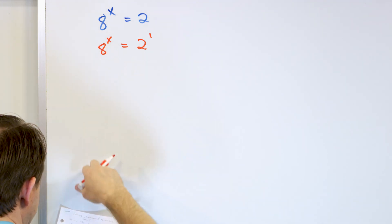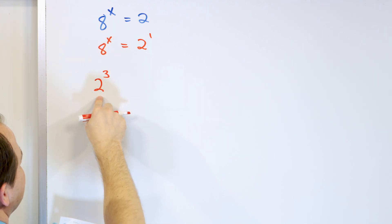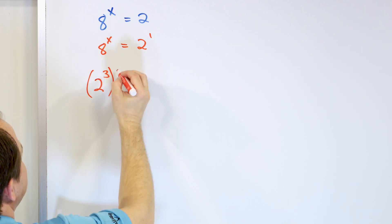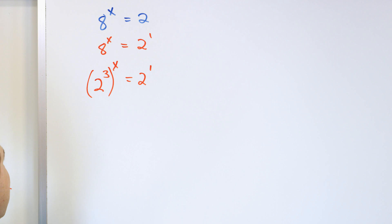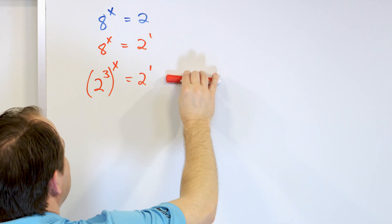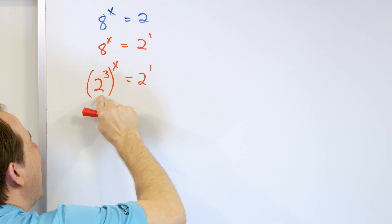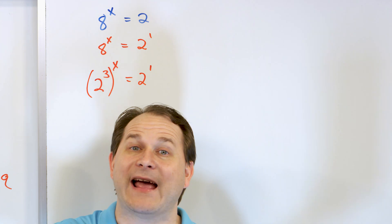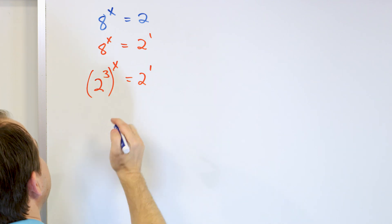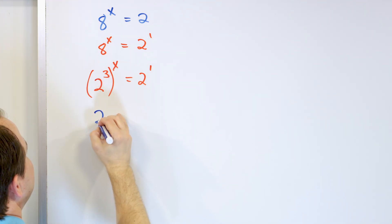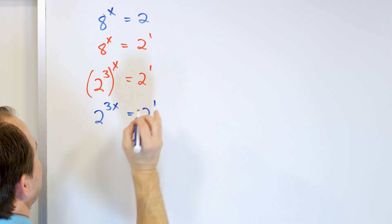We need to write eight as a power of two. Eight equals two to the power of three, since two times two is four, times two is eight. So we can write this as two to the power of three, all raised to the x power, equals two to the first. That gives us two to the power of three times x, which is 3x, equals two to the power of one.